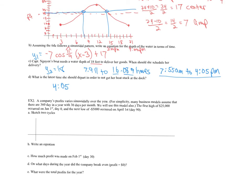Second example: a company's profits vary sinusoidally over the years. For simplicity, let's assume there are 360 days in a year and each month has 30 days. Our first high of $25,000 occurs on January 1st at day zero. The y-axis is in dollars and the x-axis is in days.